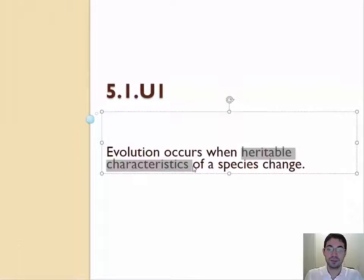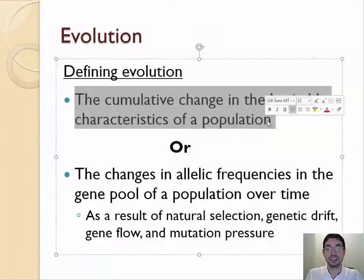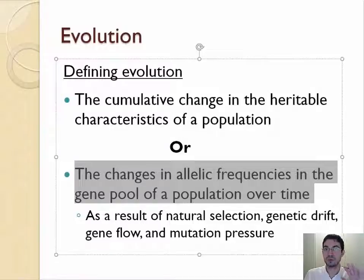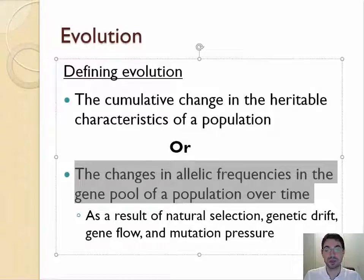With enough time, this can cause a species change, or speciation. The definition: the cumulative change in the heritable characteristics of a population. Here is a fancier definition, which you'll understand once we have studied genetics. When you're reviewing this later for the IB exam, the changes in the allelic frequencies in the gene pool of the population over time will make more sense.